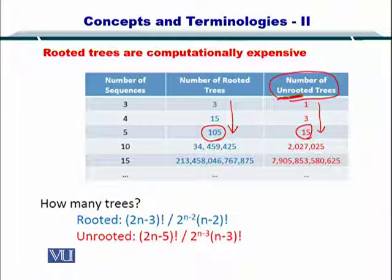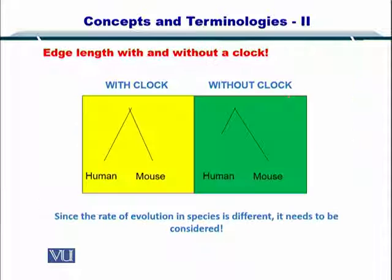But then, unrooted trees have their own disadvantages as well. Also, another additional and very useful point to note here is that the length of the branch. The length of the branch can represent the distance as well.